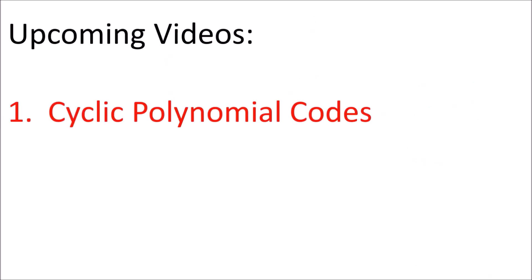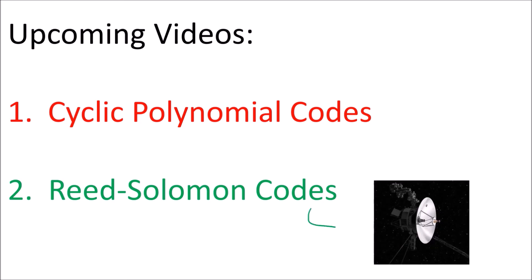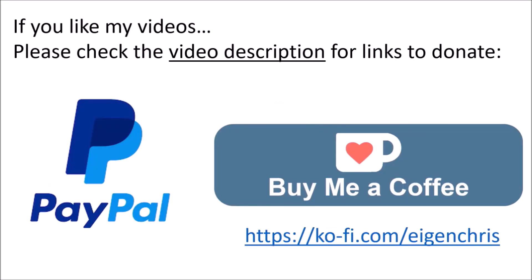In upcoming videos, I'll discuss cyclic polynomial codes and Reed-Solomon codes, which are the real codes used by the Voyager probes to send images from space back to Earth. If you like my videos, please check the links in the description and consider supporting me.